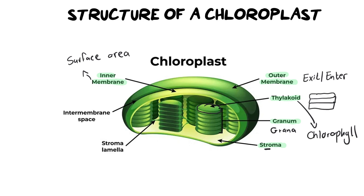Moving on to our stroma lamella. In different textbooks, this is called different things — it may be called integrana lamella, middle lamella, or just lamella. They're all the same thing and are all interchangeable. This picture also has an intermembrane space labelled, but that is an optional label and it's very rare to be required to include it.